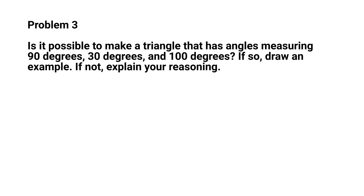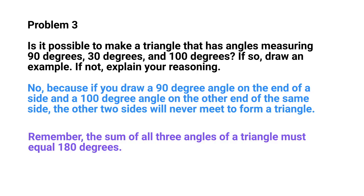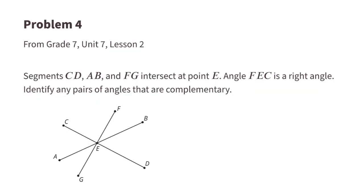No, because if you draw a 90-degree angle on the end of a side and a 100-degree angle on the other end of the same side, the other two sides will never meet to form a triangle. Remember, the sum of all three angles of a triangle must equal 180 degrees. So for this example, 90 degrees plus 30 degrees plus 100 degrees is well over 180 degrees.